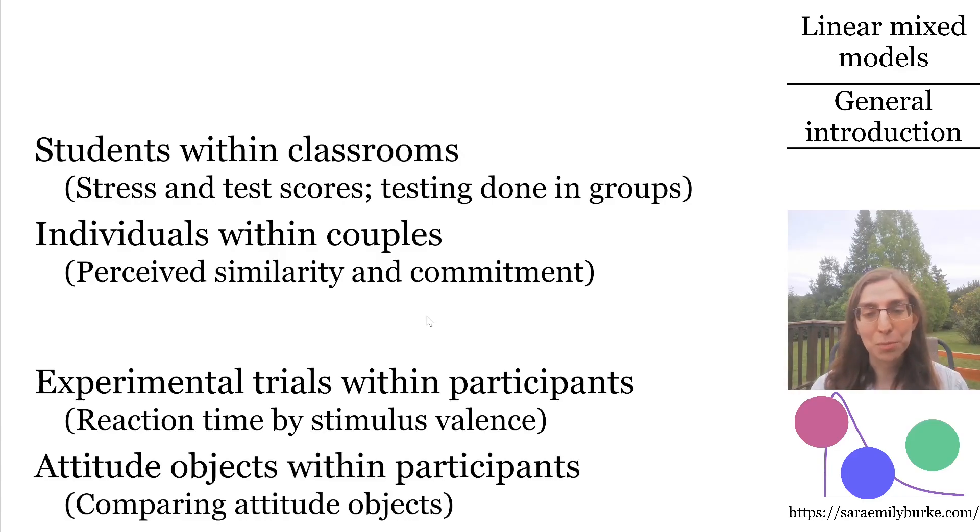Last example. Suppose you're studying explicit attitudes toward five specific attitude objects, such as five specific religious groups. Each participant reports their attitude on a scale from negative to positive toward each religious group in a random order. Maybe those groups are Christian, Muslim, Buddhist, Hindu, and Atheist. You're interested in comparing the overall attitudes toward each of these groups.